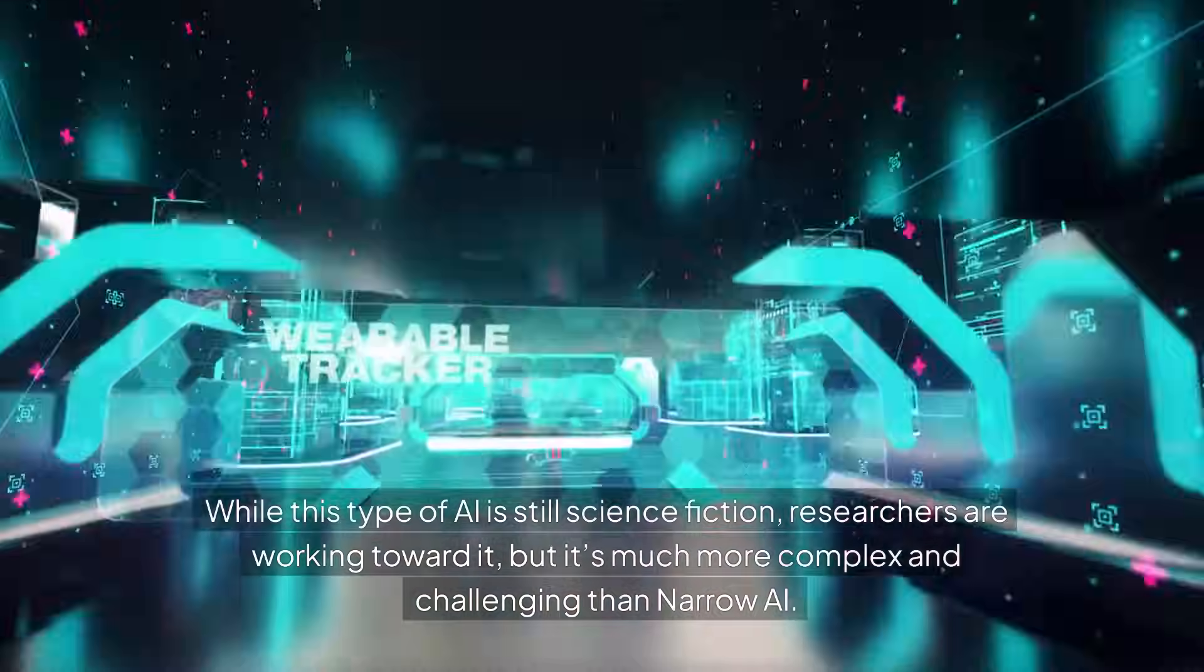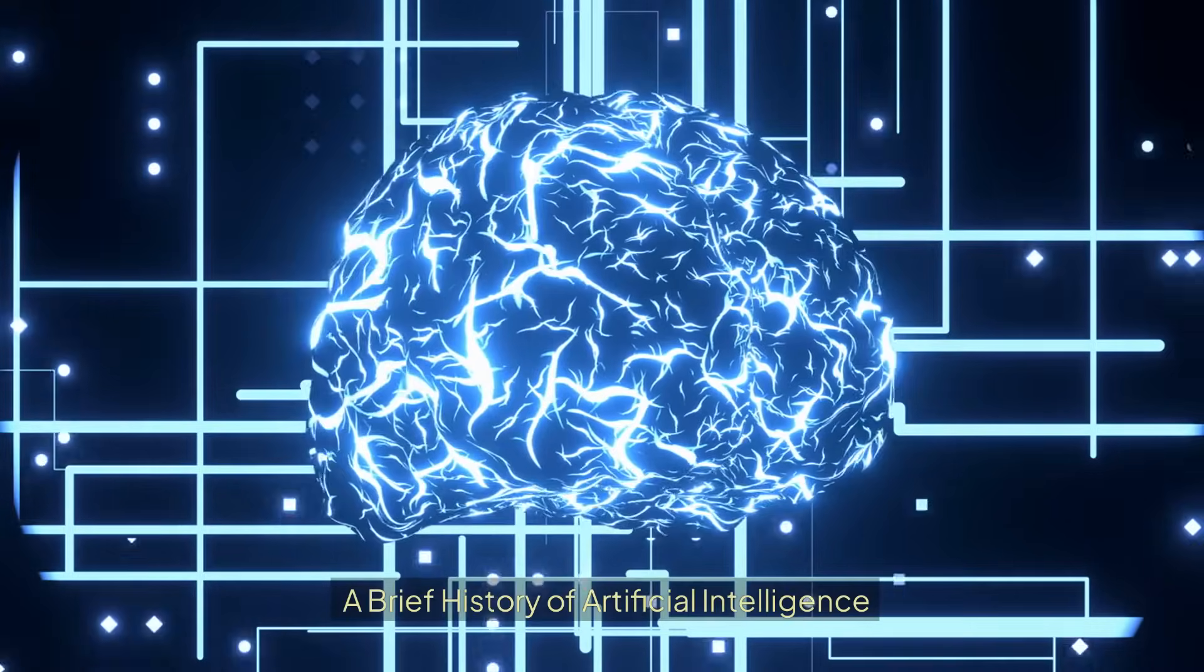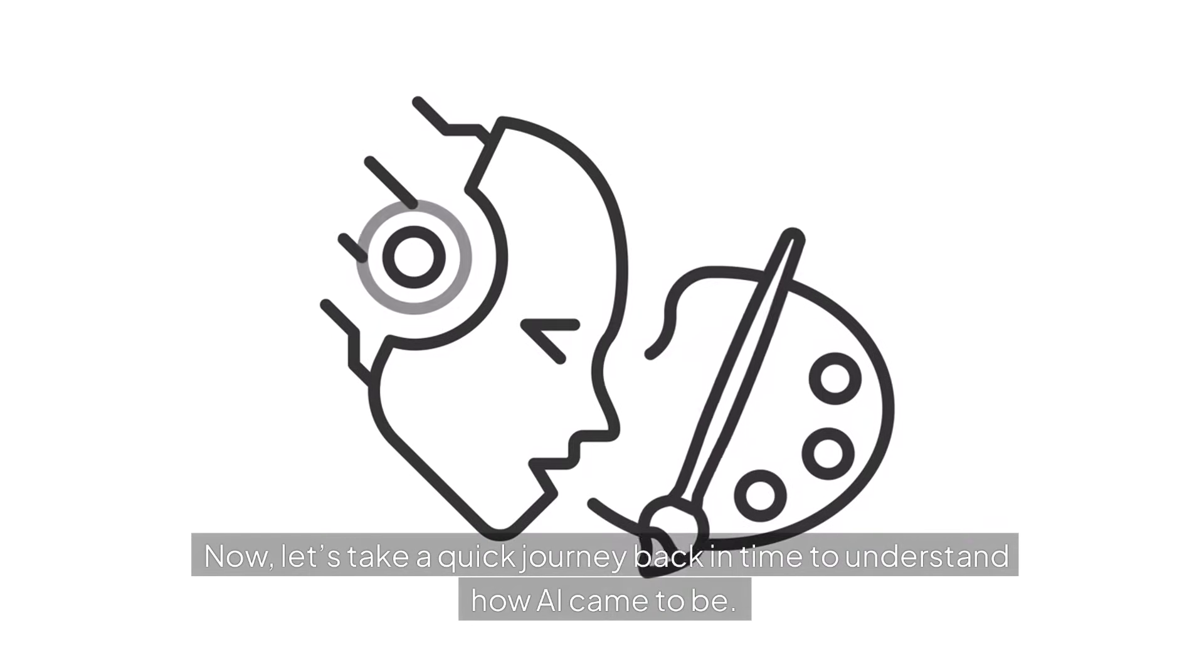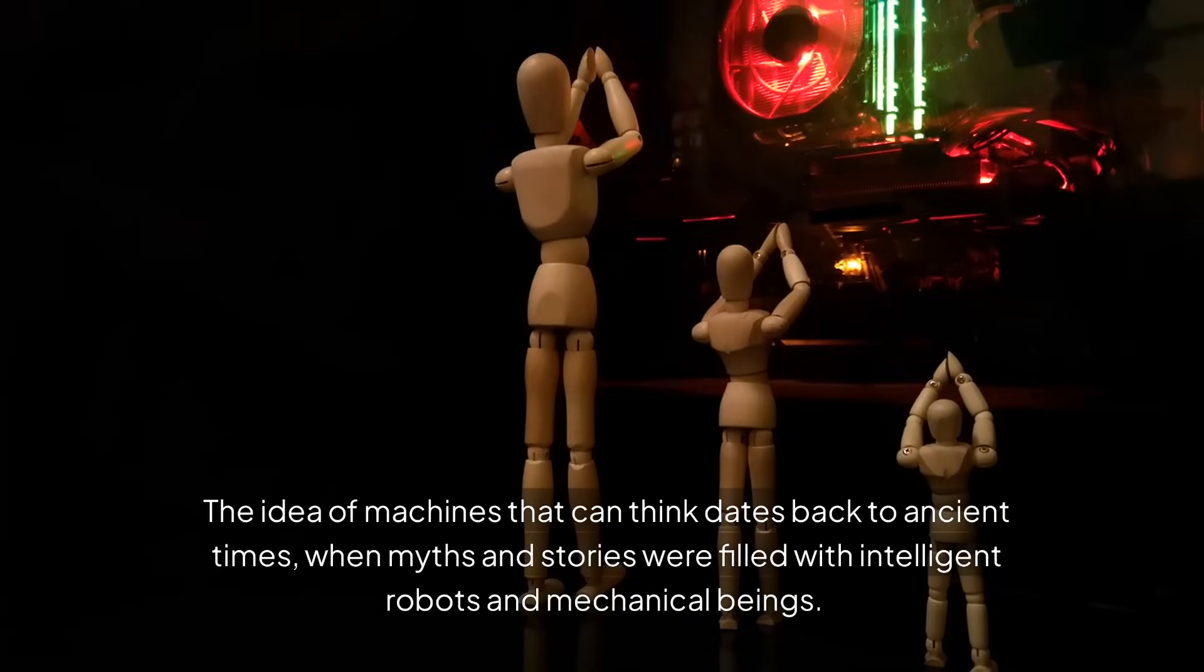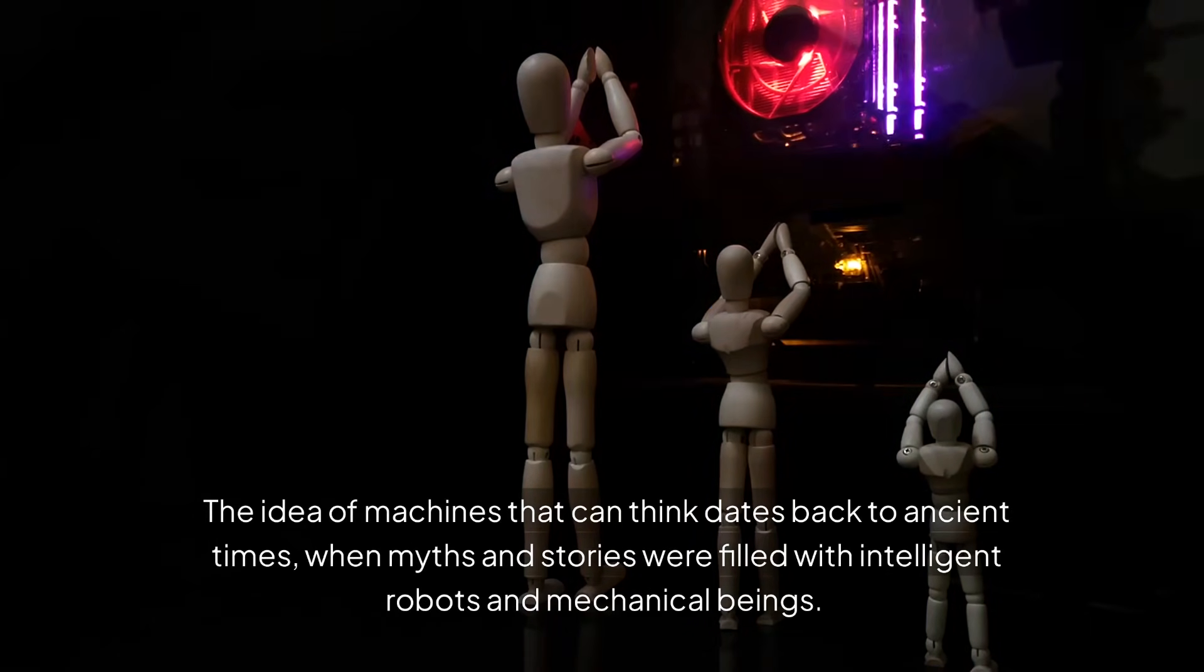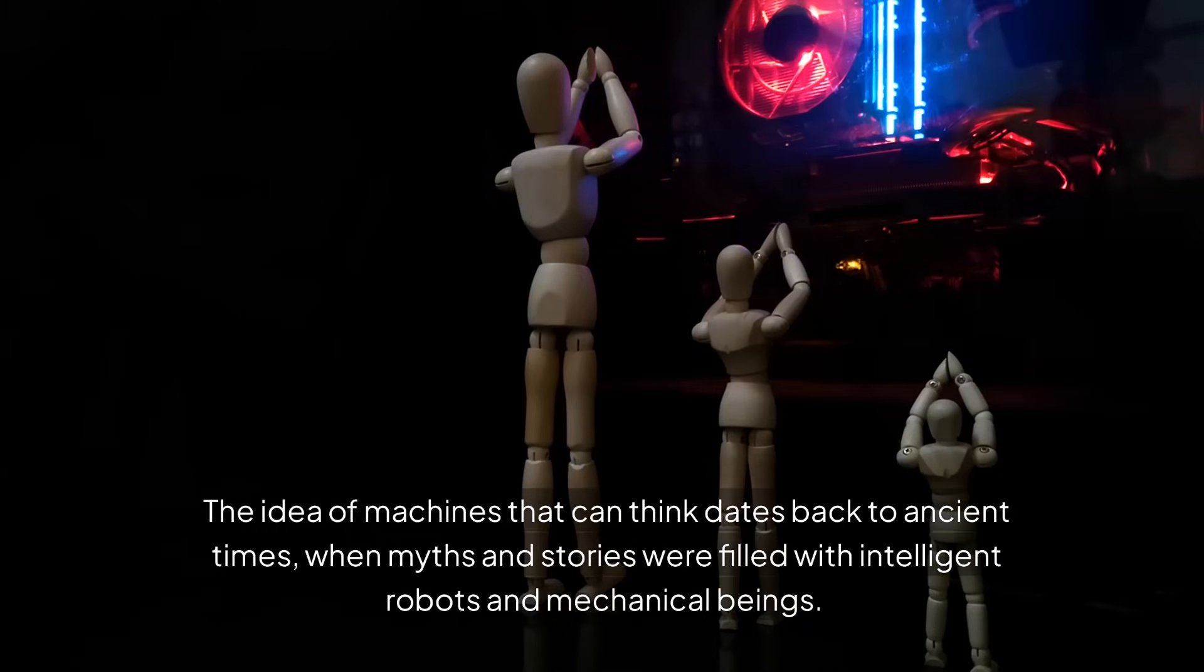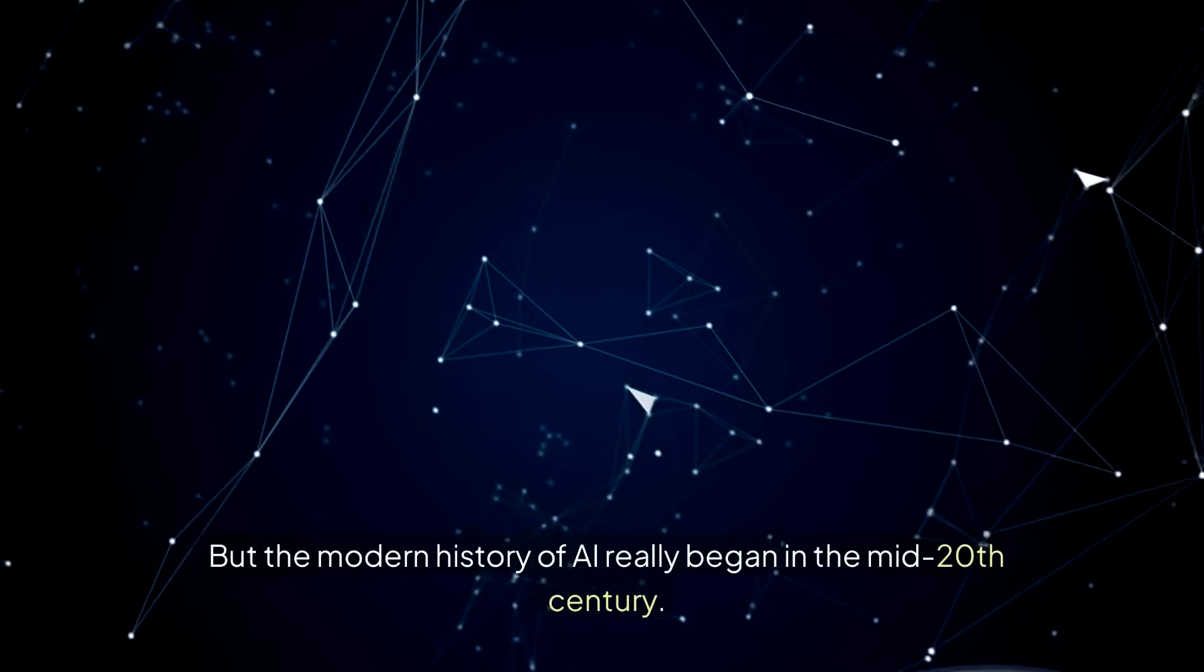A brief history of artificial intelligence. Now let's take a quick journey back in time to understand how AI came to be. The idea of machines that can think dates back to ancient times, when myths and stories were filled with intelligent robots and mechanical beings. But the modern history of AI really began in the mid-20th century.